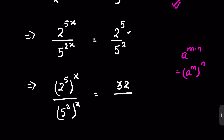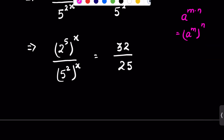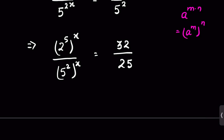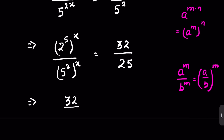2 raised to the power 5 is 32 and 5 raised to the power 2 is 25. Using the identity a raised to the power m upon b raised to the power m equals a upon b whole raised to the power m, we can write this as 32 upon 25 whole raised to the power x, which is equal to 32 upon 25.